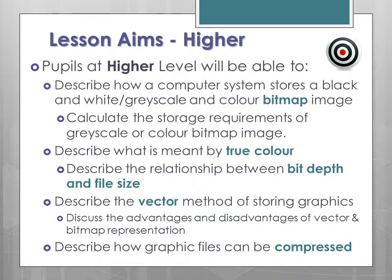In addition to the Int 2 outcomes, Higher students should be able to describe how a computer system stores black and white, greyscale, and colour bitmap images, calculate their storage requirements, describe what is meant by true colour, describe the relationship between bit depth and file size, discuss the vector method of storing graphics including relative advantages and disadvantages versus bitmap, and describe how graphic files can be compressed.